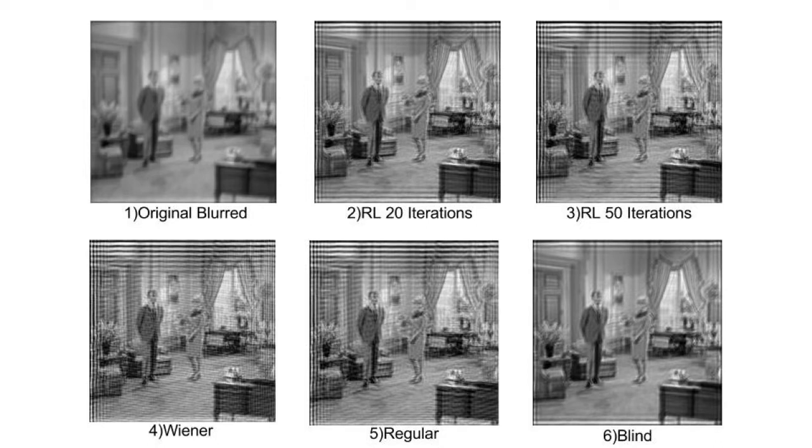The first one is the original blurred image. The second is the Richardson-Lucy with 20 iterations and the third is the 50 iterations. As you can see, the difference from 20 to 50 is that blurredness has decreased but the ringing effect has increased.